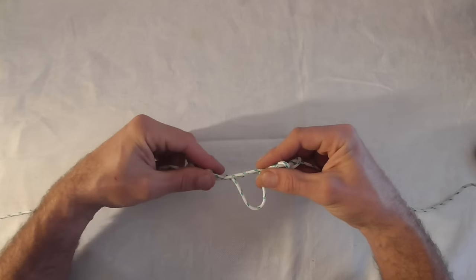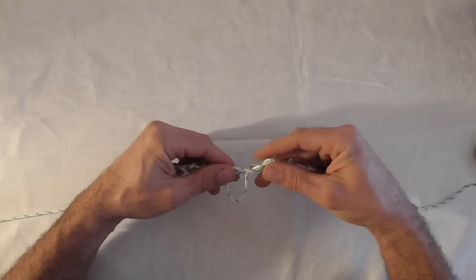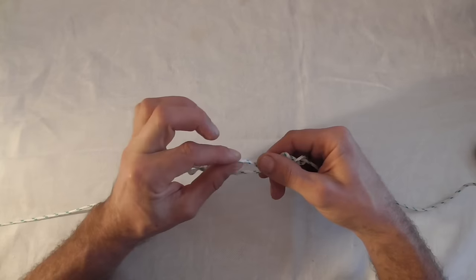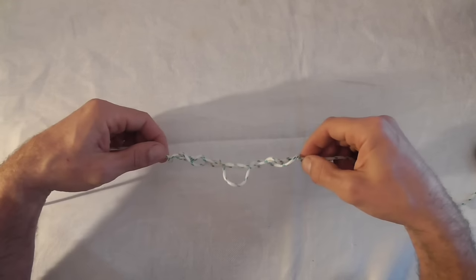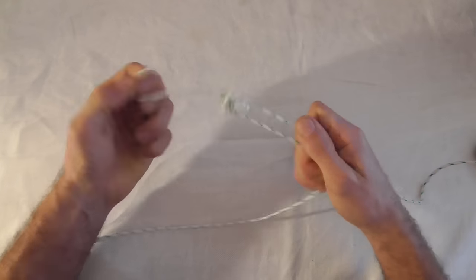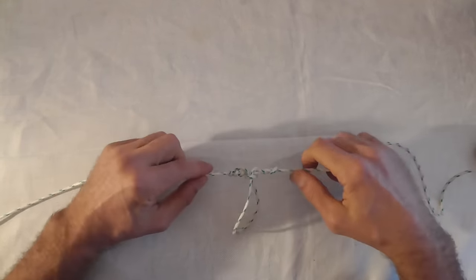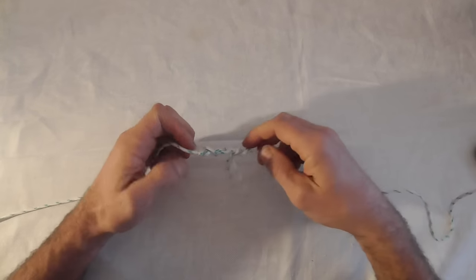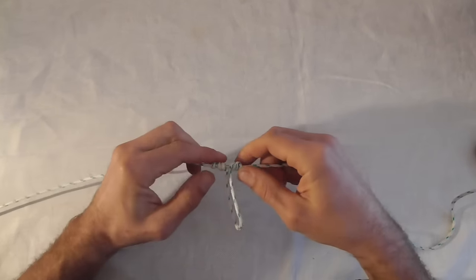Normally you'd lube up your line and then put that loop between your teeth and tug on the ends to set it. But I'm just going to set it this way today. So I'm just going to pull that and then pull on these two ends to get it tight.